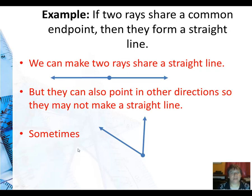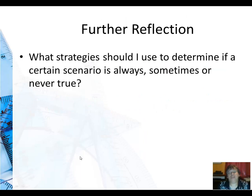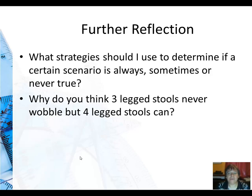Sometimes two rays that share a common end point will form a straight line. So for further reflection, what strategy should I use to determine if a certain scenario is always, sometimes, or never true? Well, hopefully you noticed by the column in your notes. And what I did for each of the examples, I drew a picture. Please, please, please draw a picture. And try to think of the different ways you can arrange it, and that will make your life a lot easier. All right? And here's a one for you. Why do you think three-legged stools never wobble, but four-legged stools can? Think about a plane and keeping things flat.